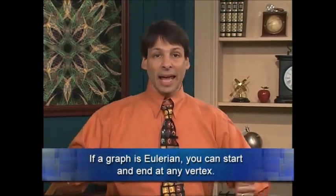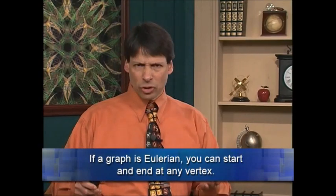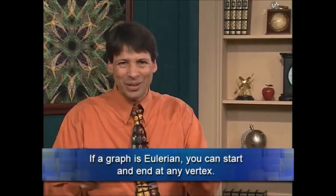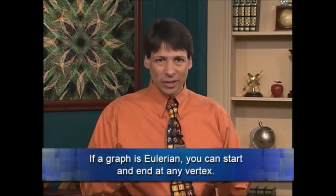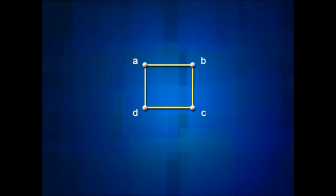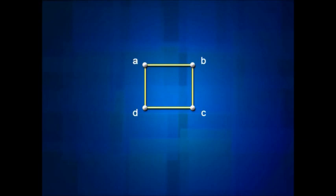Here's an important observation about Eulerian graphs: if a graph is Eulerian, you can start and end at any vertex — there's no special starting and ending point. It's like a continuous piece of rope. For example, a simple square cycle can be drawn as a-b-c-d-a, or starting at b as b-c-d-a-b, or c-d-a-b-c, and so on. Any place can be a starting point in an Eulerian graph.